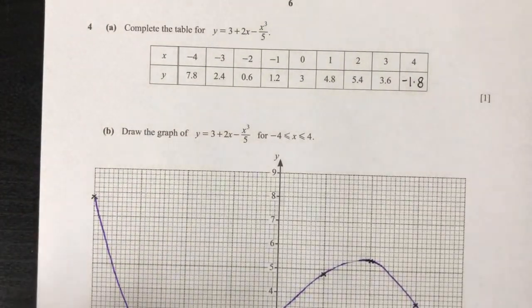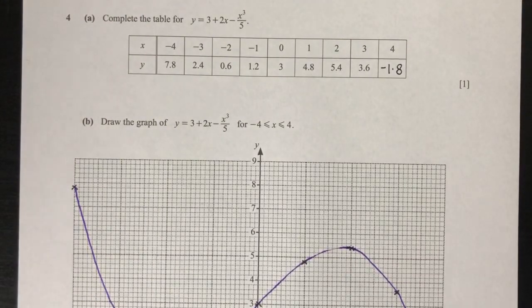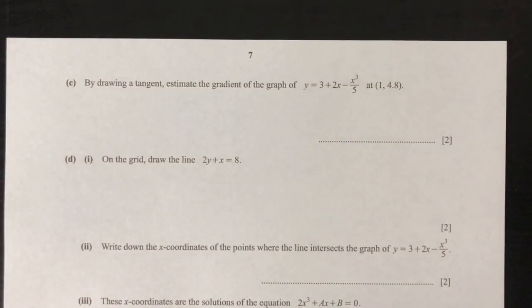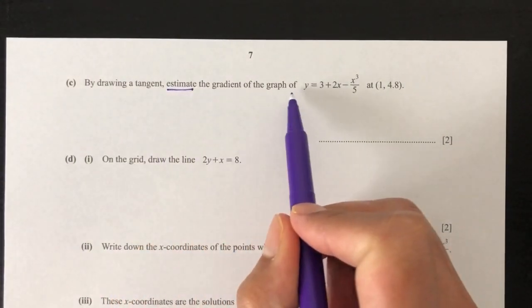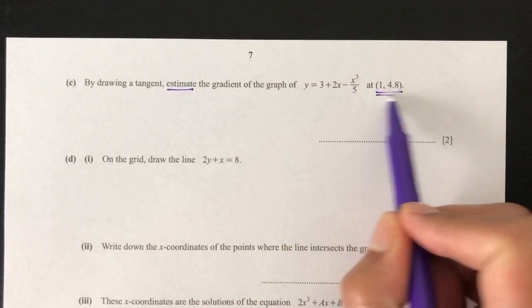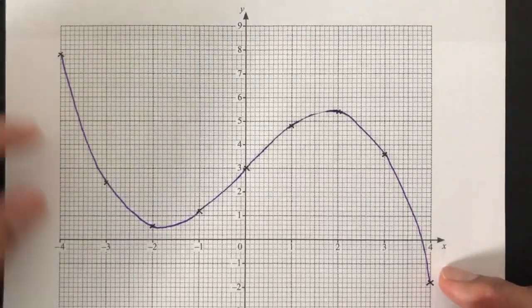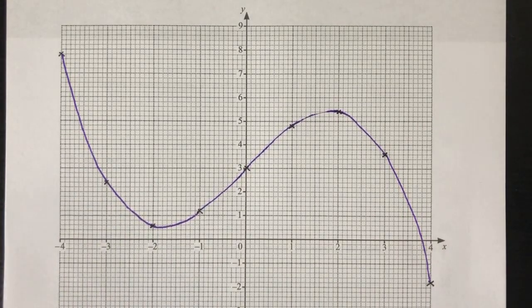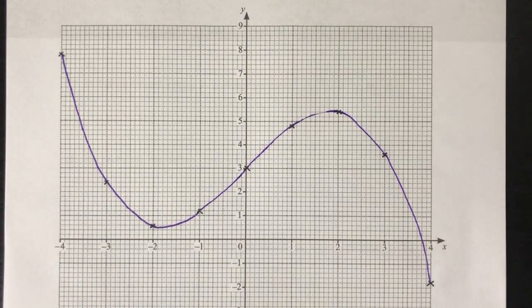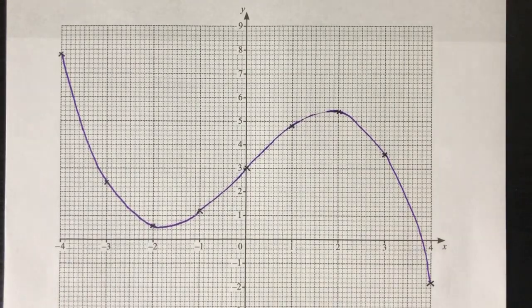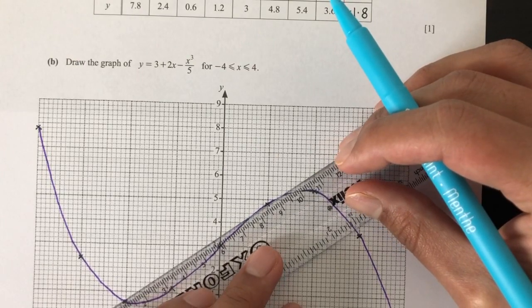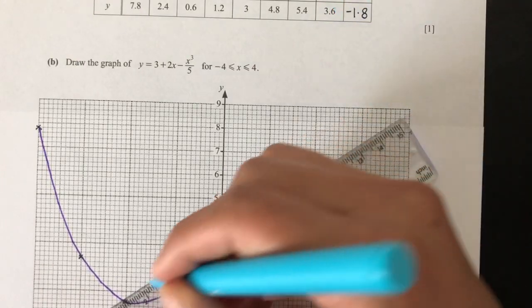Now following up, this is a very common question too. By drawing a tangent, estimate the gradient of the graph at this point, one and then 4.8. So where is that? One, 4.8 will be this point, right? So we have to draw a tangent. Let me use a different color here, color blue. So you have to go at this point, and then draw a tangent that touches the point at only one point. There you go. That is your tangent.